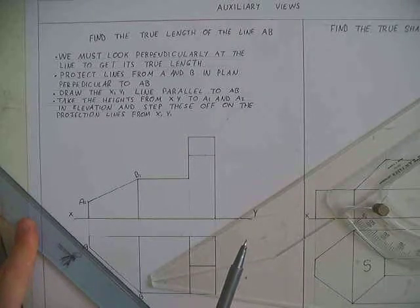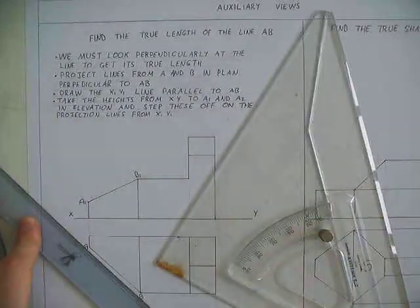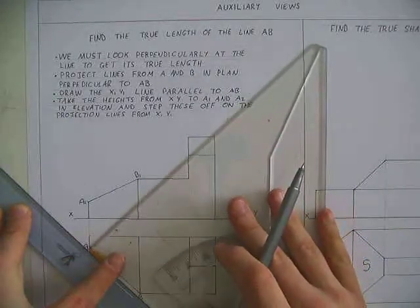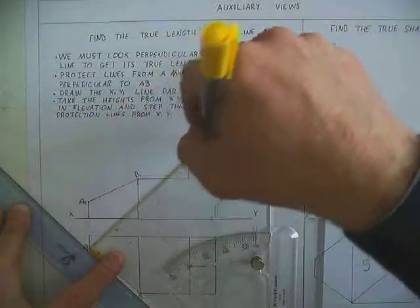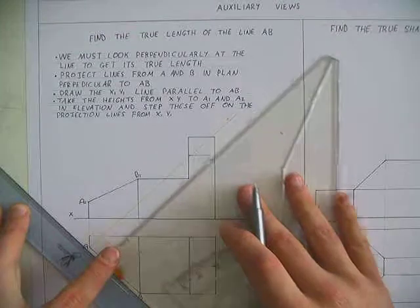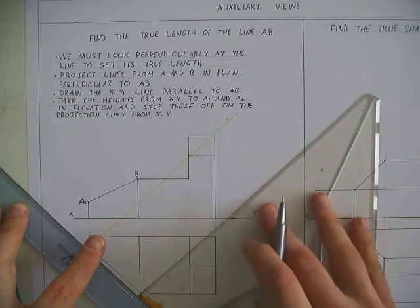So I will set up one set square in line with AB and project at 90 degrees from A and 90 degrees and B.